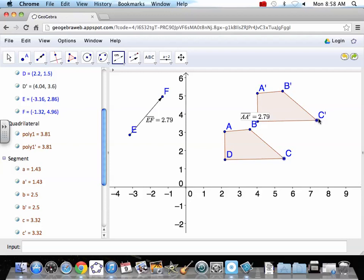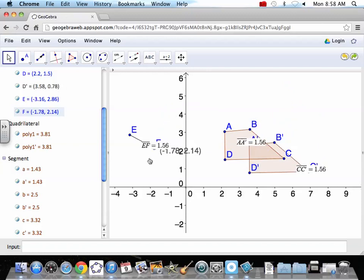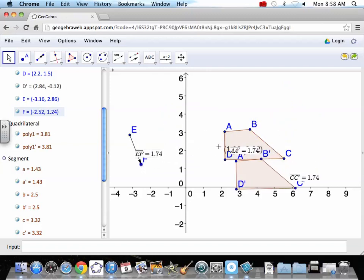How about C to C prime? Better be the same, right? Because the vector told us to move that far and in that direction. If I change that, let's see - 1.74, 1.74. We've made it all.